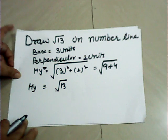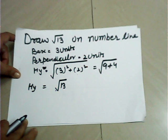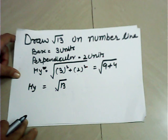Let's start. Draw √13 on the number line. Take base equal to 3 units and perpendicular equal to 2 units.